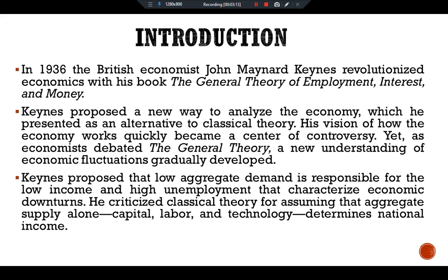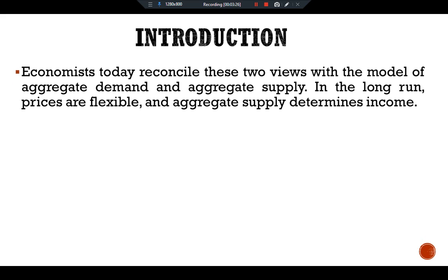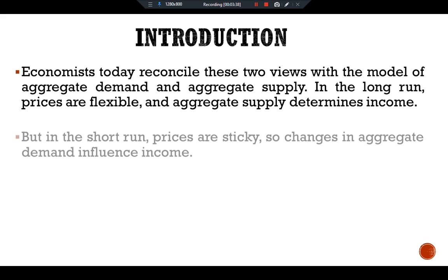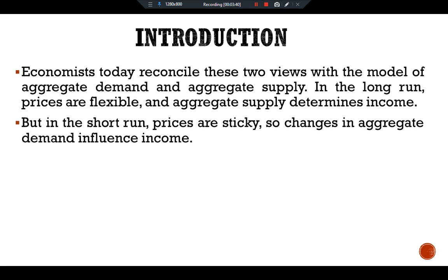Keynes criticized classical theory for assuming that aggregate supply alone — capital, labor and technology — determines national income. So economists today reconcile these two views with the model of aggregate demand and aggregate supply. In the long run, prices are flexible and aggregate supply determines income. But in the short run, prices are sticky, so changes in aggregate demand influence income.